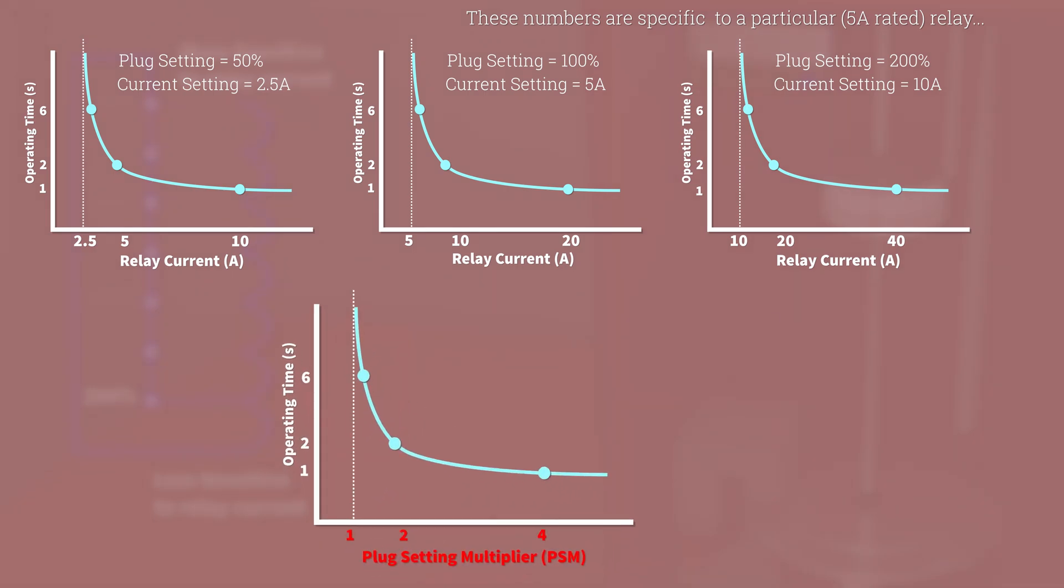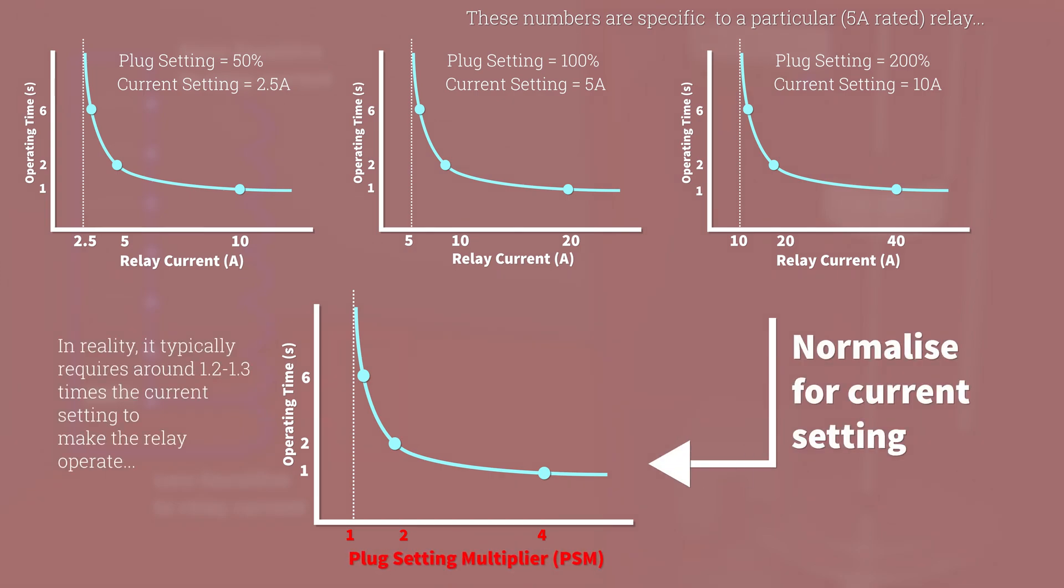But instead of having a graph to show each plug setting separately, we can normalize to the current setting. And this means you only need a single graph to show all possible plug settings. The x-axis is now called the plug setting multiplier. And this is a more universal way to show a particular relay characteristic.